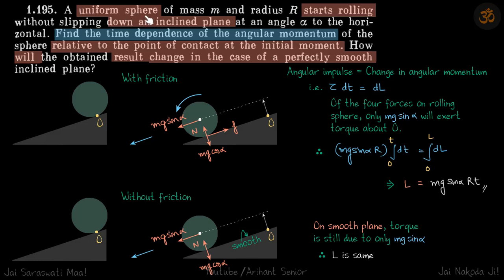A sphere starts rolling down an inclined plane. We need to find what will be the angular momentum relative to the point of contact at the initial moment and will the result change in case of a perfectly smooth inclined plane.